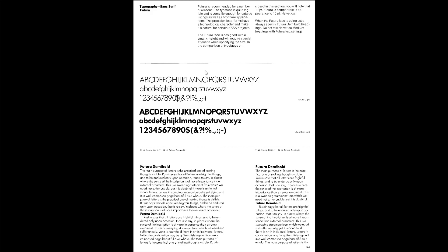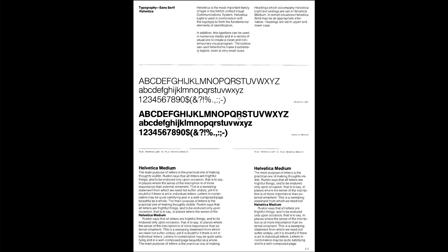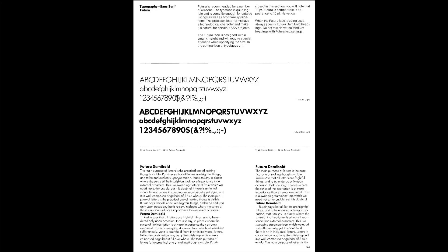Geometric fonts — whether square-based or circular-based — are more about the graphics than the communication. When you skim through the lowercase letters your eye stutters at every big circle. The type color — the visual consistency of the text — becomes very inconsistent through Futura. They found within a decade of this guide being written that putting body text in this sort of font was not a good idea if people had to read a lot of it.